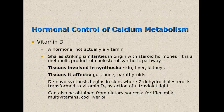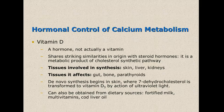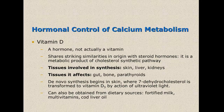Several organs are involved in this process, including the skin, the liver, and the kidneys, and it affects tissues such as the gut, the bone, and the parathyroids. The whole thing starts with de novo synthesis in the skin, where 7-dehydrocholesterol is transformed into vitamin D3 by the action of ultraviolet light. You need light from the sun or another light source in order to make vitamin D in the skin.